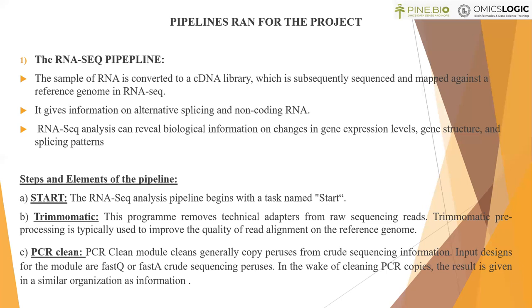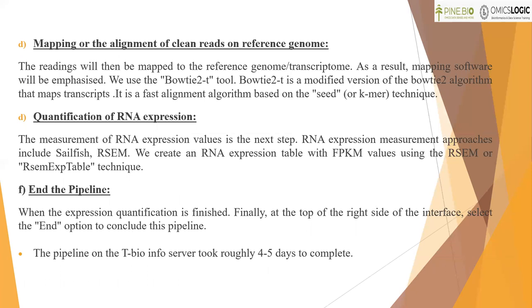The third step is PCR Clean. The PCR Clean module removes duplicate copies from crude sequencing data. Input for the module is in FASTQ format, and the output after cleaning PCR duplicates is also given in FASTQ format. The fourth step is mapping or alignment of clean reads on the reference genome. After screening and pre-processing the raw reads, they are mapped to the reference genome using the Bowtie2 tool, which is a fast alignment algorithm based on the Bowtie2 algorithm that maps transcripts.